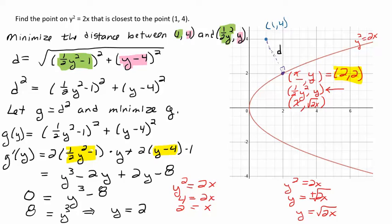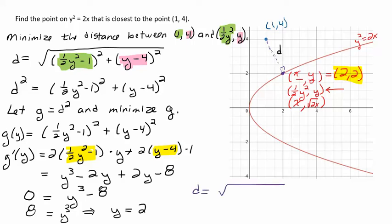Now, if we wanted to find the actual distance, if we wanted to find the smallest distance, then we would just use the distance formula and use the distance formula with (1, 4) and (2, 2) and work it out. Or you could plug y back up in here into the distance formula. Let's just go ahead and get that minimum distance. So the minimum distance would be the square root of (2 minus 1) squared plus (2 minus 4) squared, which is the square root of 1 plus 4 or square root 5. So that's the minimum distance.